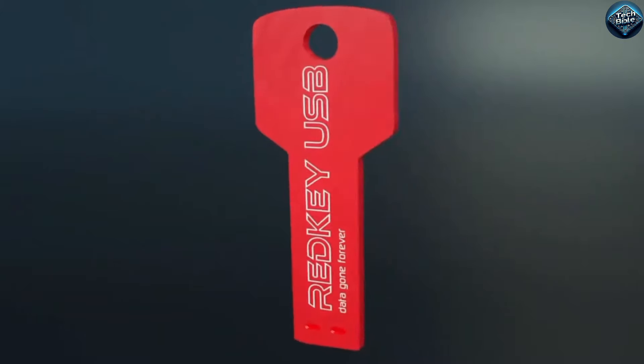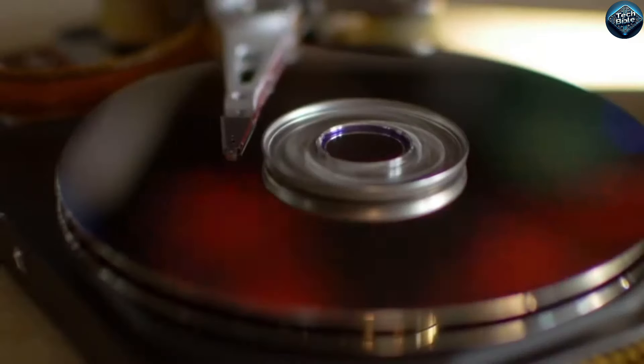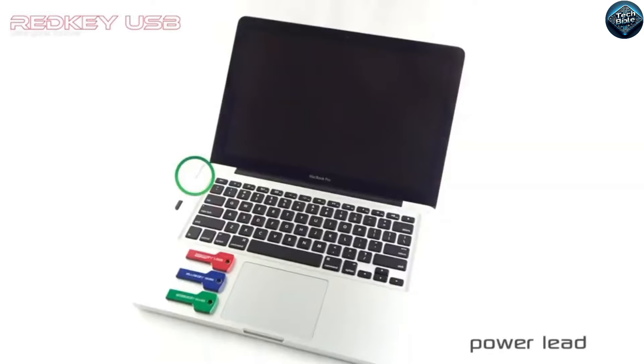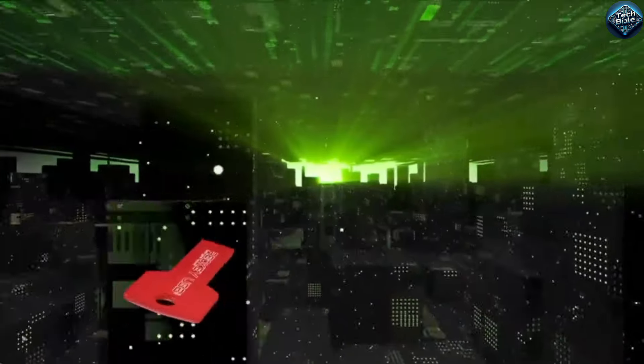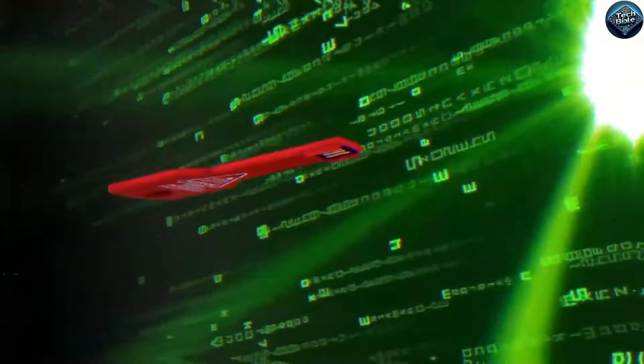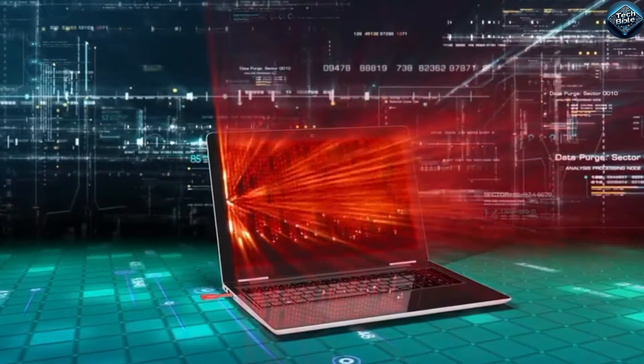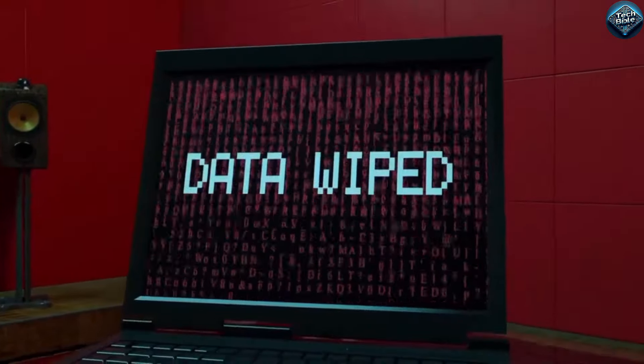The USB Destruct Hard Drive Eraser is a banned gadget that effectively obliterates data on hard drives. This device works by delivering a powerful electrical surge through the hard drive circuits, rendering the stored data completely irretrievable. Designed for those with malicious intent, it's capable of causing irreversible damage to data storage systems.